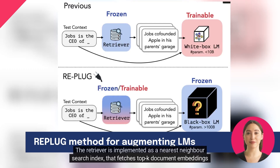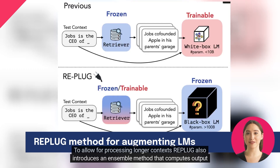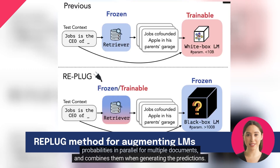The retriever is implemented as a nearest neighbor search index that fetches top-k document embeddings given a query. To allow for processing longer contexts, Replug also introduces an ensemble method that computes output probabilities in parallel for multiple documents and combines them when generating the predictions.